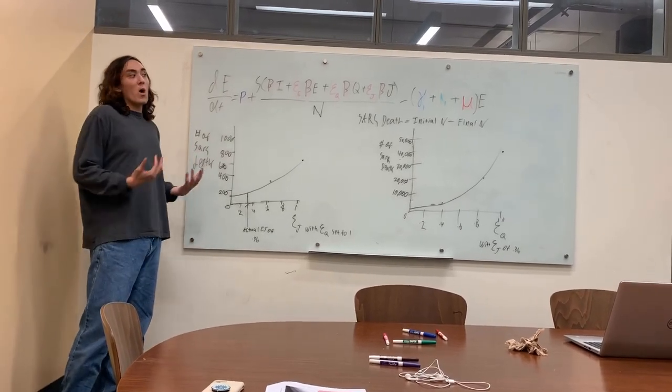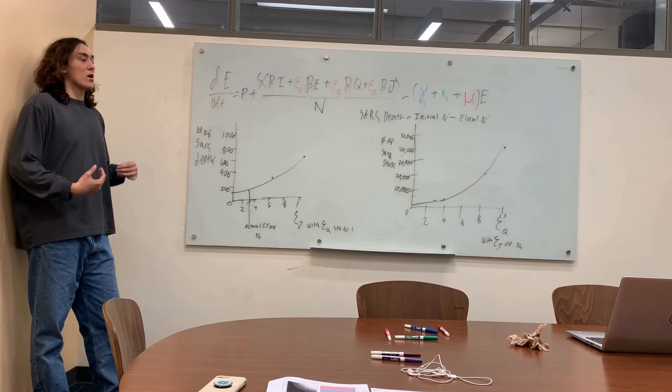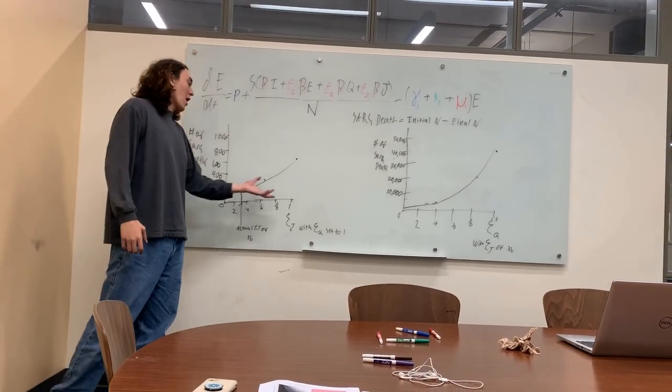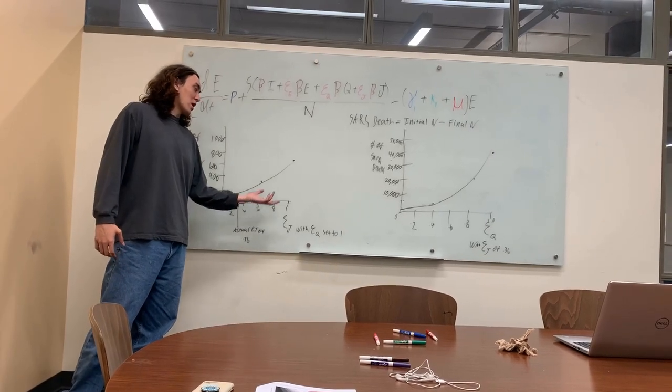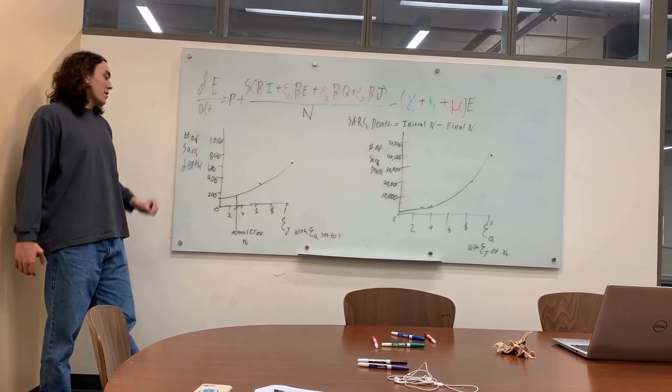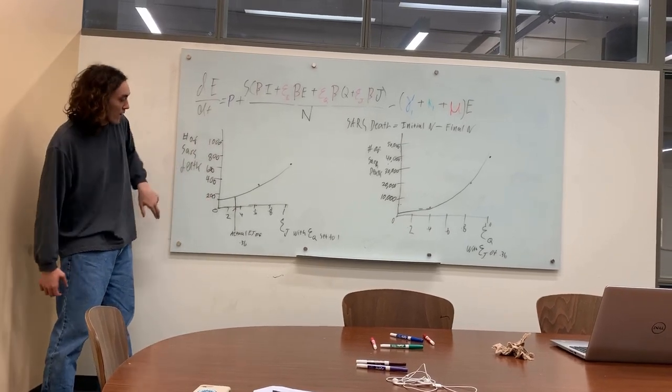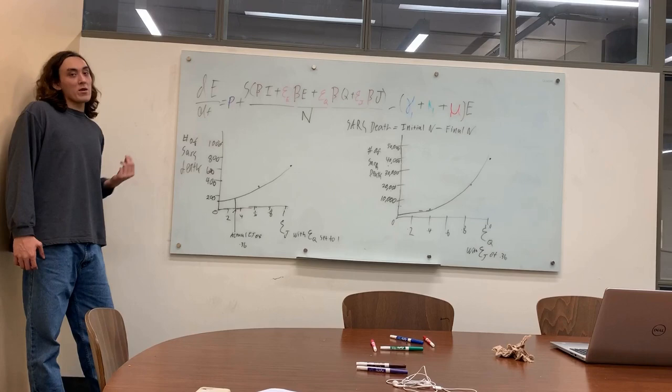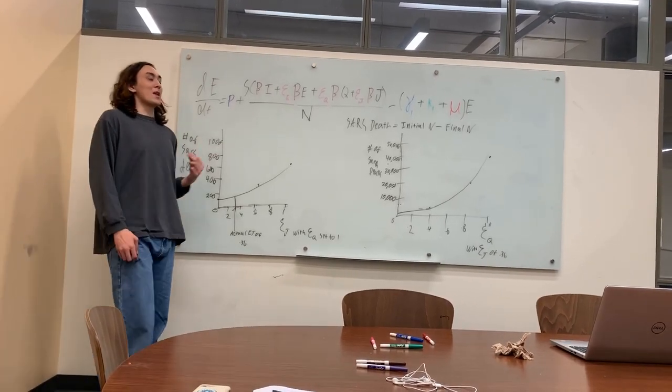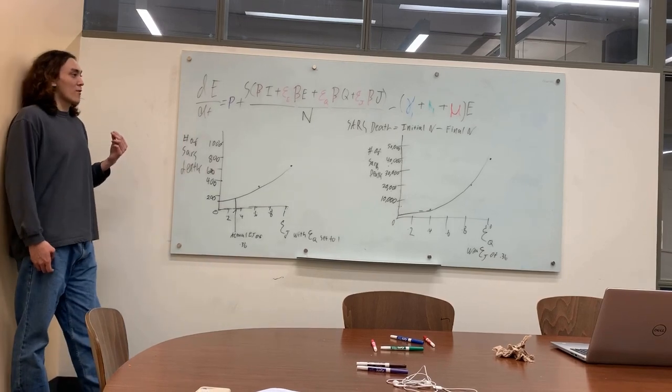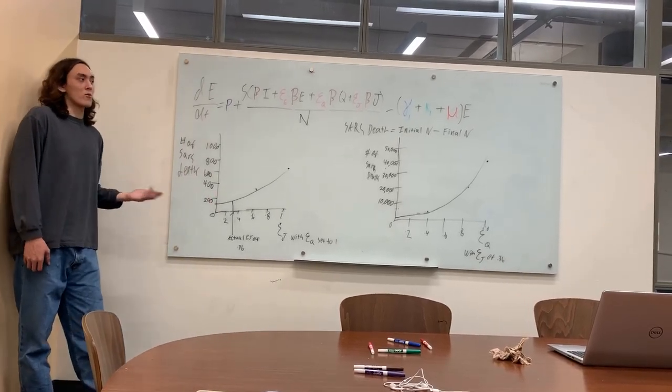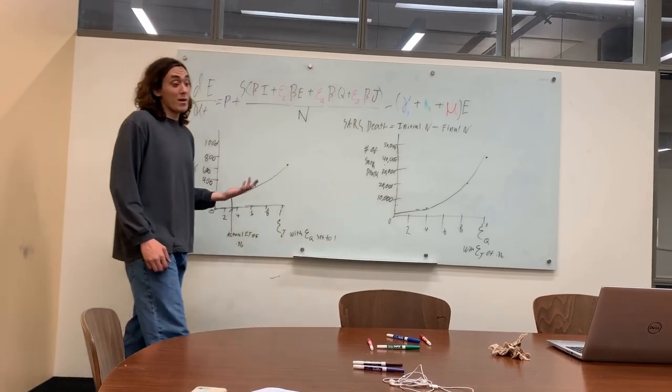You have epsilon j varying here, and we've set epsilon q in this equation equal to 1. That means our epsilon q is the worst possible, there is no hygiene procedures, there is nothing going on here. Our quarantine policy is poor. What we see is, obviously, as epsilon j approaches one, things get worse and worse. But if we look at a perfect epsilon j value of zero, our isolation policy is perfect. Hygiene is fantastic. There is no transmission coming in or out from isolated populations. We see a death rate around 150 and 100, which is worse than it actually was.